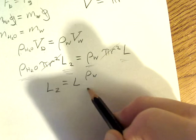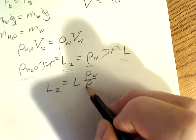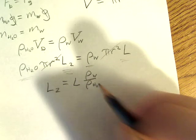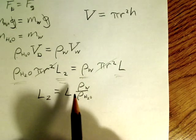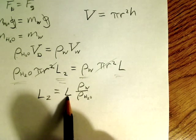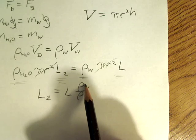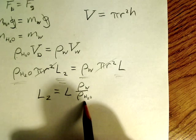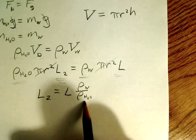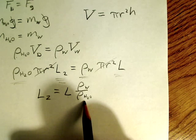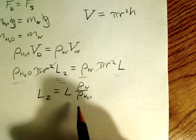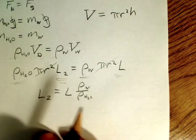So this right here would be 50 centimeters, this would be the density of the wood which would be 0.5, and this would be the density of water which would be one. So I guess you can just do that one in your head: 0.5 times 50 centimeters and just get a number over there.